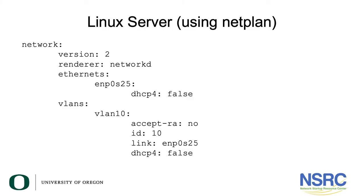As a last example, we look at a Linux server using netplan — for example, a newer Ubuntu that uses netplan to configure interfaces. In the configuration, under 'ethernets' you have the physical Ethernet interfaces with IP address configuration. Under 'vlans' you create your VLANs — the name doesn't have to include the ID but we recommend it so it's easy to identify in interface output. Under the VLAN configuration you specify the ID, which is the tag assigned to packets, and the link, which specifies the physical interface the VLAN is connected to.